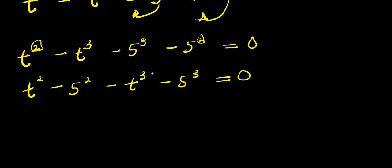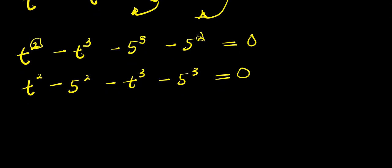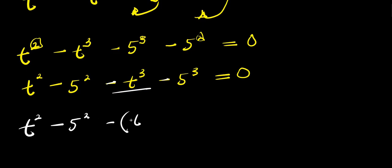Let's group the terms: t² with 5², and t³ with 5³. So we have t² minus 5² minus t³ minus 5³ equals 0. Now we can factor out the minus sign from the second group. We have t² minus 5² minus (t³ minus 5³), which gives us t² minus 5², then factor out the minus, giving plus 5³, and this equals 0.